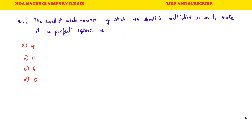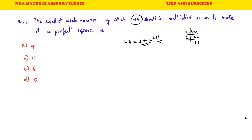Question number 23: The smallest whole number by which 44 should be multiplied so as to make it a perfect square number. This is a very simple question. 44 can be written as 2 into 2 into 11. So we need another 11 to make 11 into 11, giving us a perfect square.